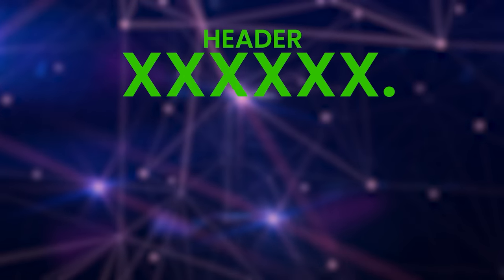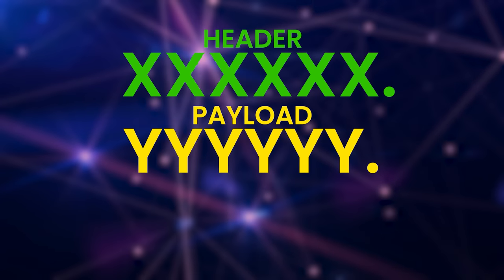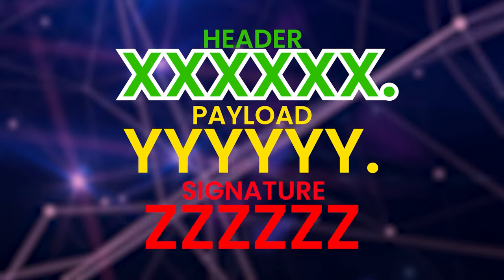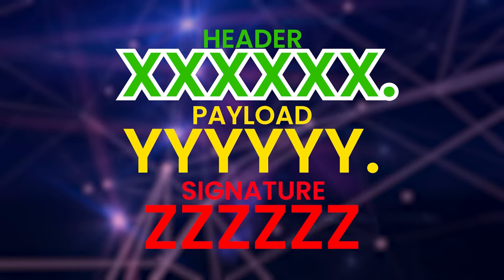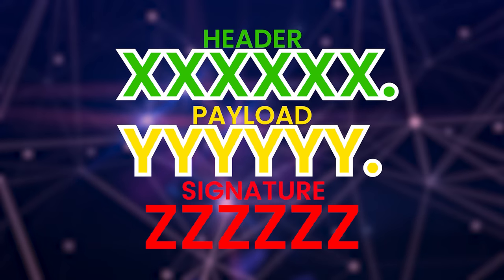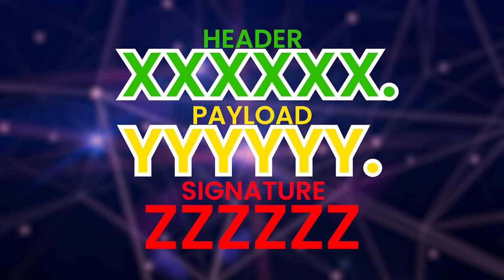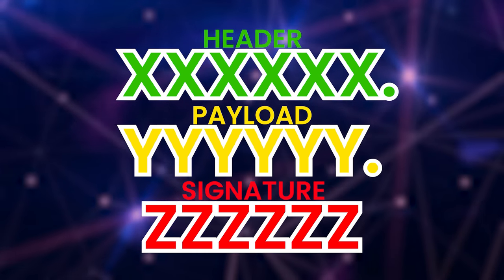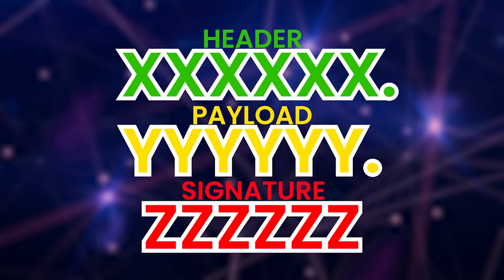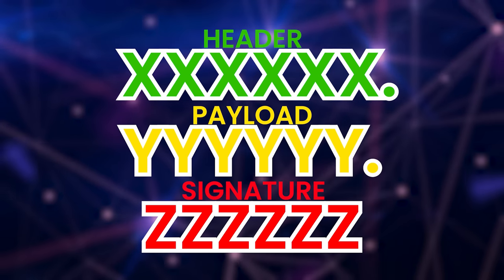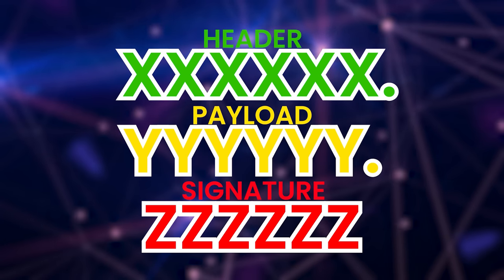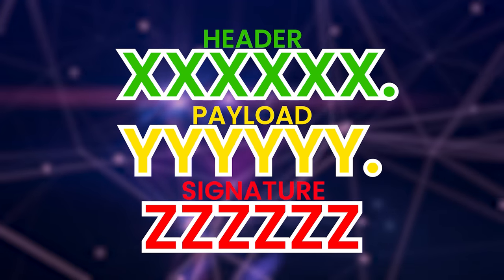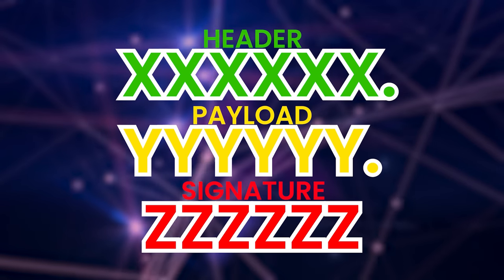To wrap up this section, let's have a look at a sample JWT token. We have three strings: the first is a base64 URL encoded header, the second is a base64 URL encoded payload, and the last is the signature — all separated by periods. This format provides a compact and easily parsable form of data that can be easily used in HTML and HTTP environments.